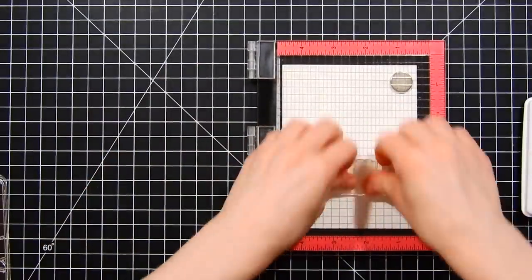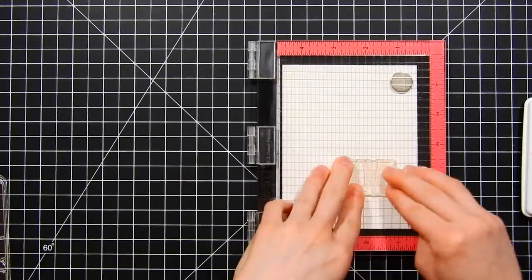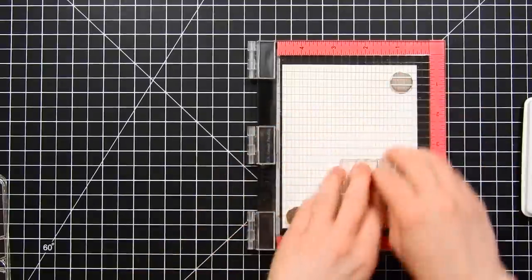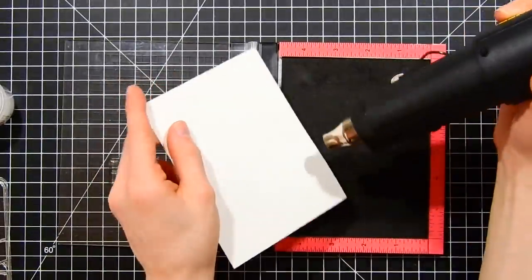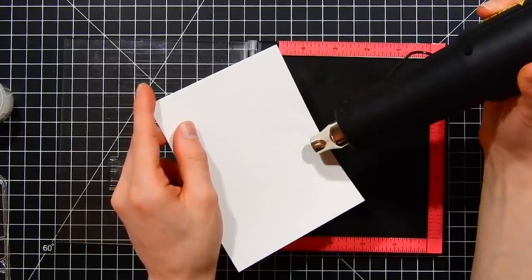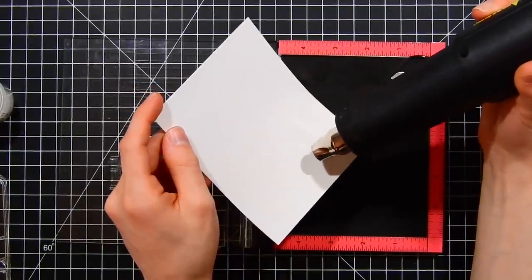I'm going to stamp my sentiment in the Simon Says Stamp Clear Embossing Ink. I love this ink to do my emboss stamping because the ink is really juicy and it holds the embossing powder so well. I'm heat setting this in some white embossing powder from Ranger using my Wagner heat gun to melt the powder.